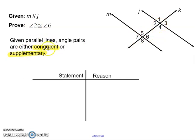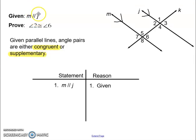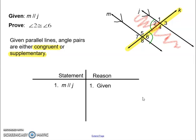Every pair of angles is either going to be congruent or it's going to be supplementary. Any two angles I make a pair out of will be congruent or supplementary. The pair we're interested in is angle two and angle six. We're given that line M is parallel to line J — that's given information, and given information always goes first. Because we have these parallel lines, let's go ahead and highlight the transversal and shade on the inside. The angles we're looking at are angles two and six.